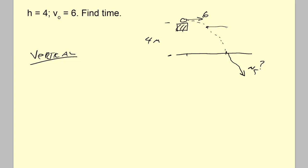the horizontal component remains at 6, because there's no force acting in its direction. The only force is gravity — it's straight down, at a right angle — so there's no component of gravity acting horizontally. The horizontal component just remains at 6.